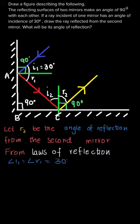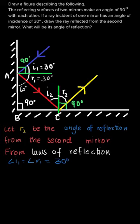From the law of reflection, angle of incidence equals angle of reflection, which is 30 degrees for the first mirror. So i1 is the angle of incidence and r1 is the angle of reflection. By the law of reflection, angle r1 equals 30 degrees. We'll mark that in the figure — r1 is 30 degrees.